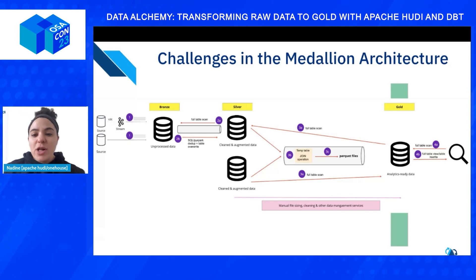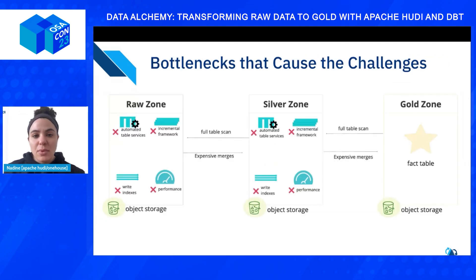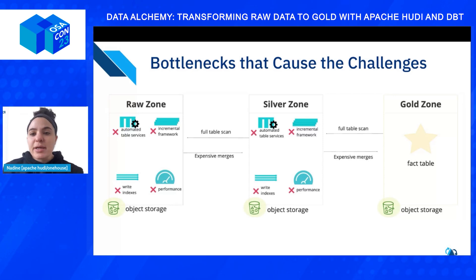The technologies available encourage you to approach the medallion architecture this way because they lack a few key things. In this diagram, each of the zones has the same services repeated. Let's go over what each are and how they affect the medallion architecture. Let's talk about automated table services. Many technologies don't offer fully automated table services that can automatically help manage your data and maintain your table's health.